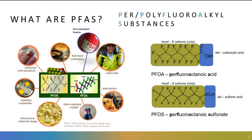Two PFAS that have received a lot of attention are PFOA and PFOS. You can see the structures on the right side of the screen. The PF in both of these abbreviations stands for perfluoro. The third letter describes the number of carbons in the head of the molecule. In PFOA and PFOS, there is an eight-carbon head, so the abbreviation is 'octa' — that's where the O comes from. The tail of PFOA is a carboxylic acid, giving it the A notation, while the tail of PFOS is a sulfonic acid, giving it the S notation.